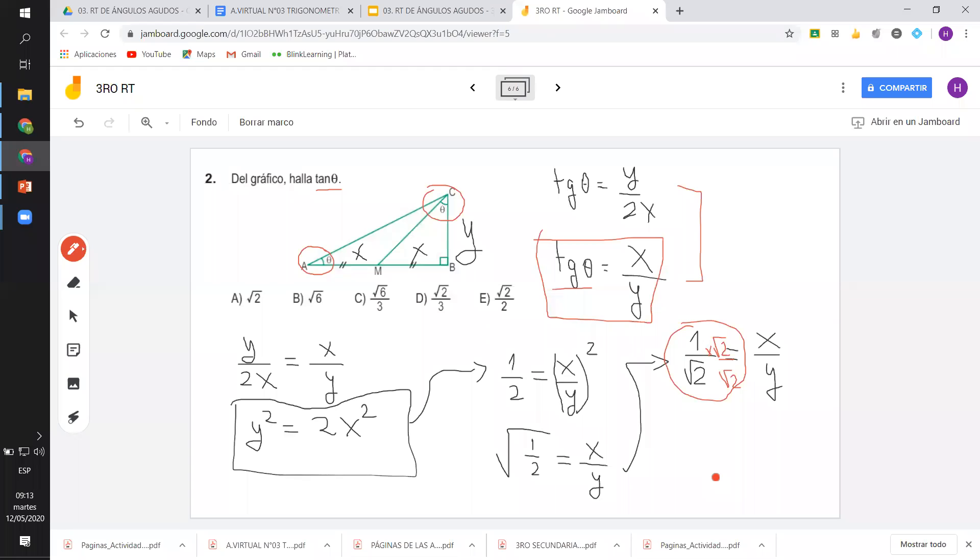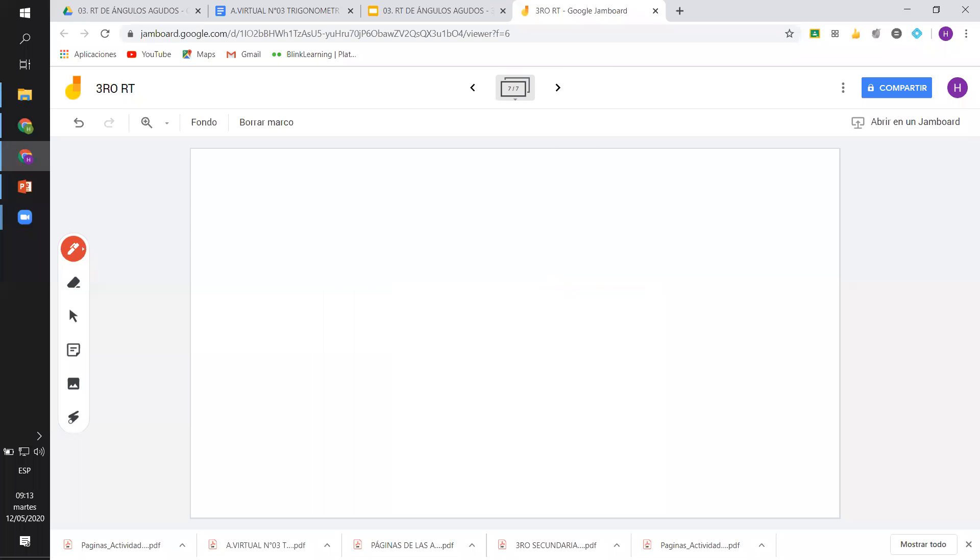Ahí está la 2, chicos. Hemos utilizado dos variables, las hemos igualado y hemos después factorizado el cuadrado y racionalizado. ¿Con la 2 todo claro? Todo claro, entonces. ¿Cuál es? Me habían dicho. Fabián quiere que le hagamos toda la tarea. No, no, no, no, Fabián. Vamos a bajarle sus puntos.